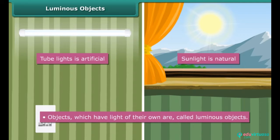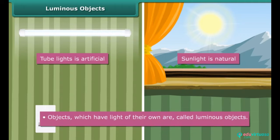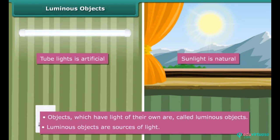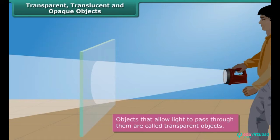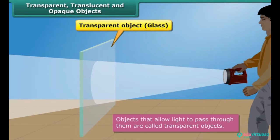Luminous objects are sources of light. Objects are classified as transparent, translucent, or opaque, depending upon their treatment of light. Objects that allow light to pass through them are called transparent objects. Most of the light falling upon a transparent object passes through it to the other side, thereby allowing us to see through them. Glass, clean air, and pure water are examples of transparent objects.